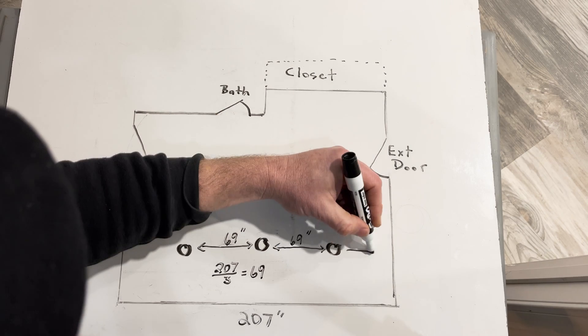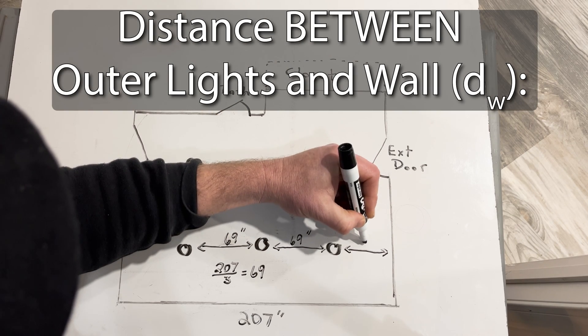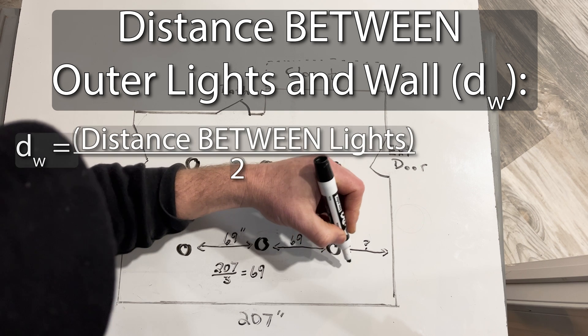Next, we calculate the distance between the outside lights of the row and the wall by taking the distance between the lights and dividing by two.